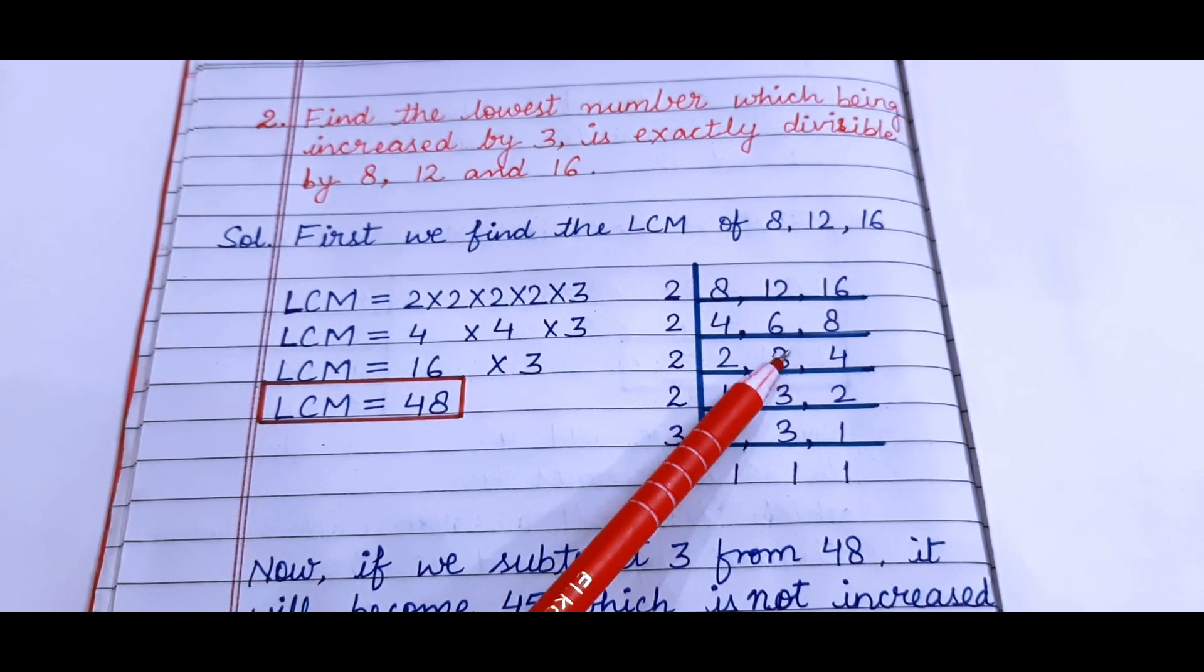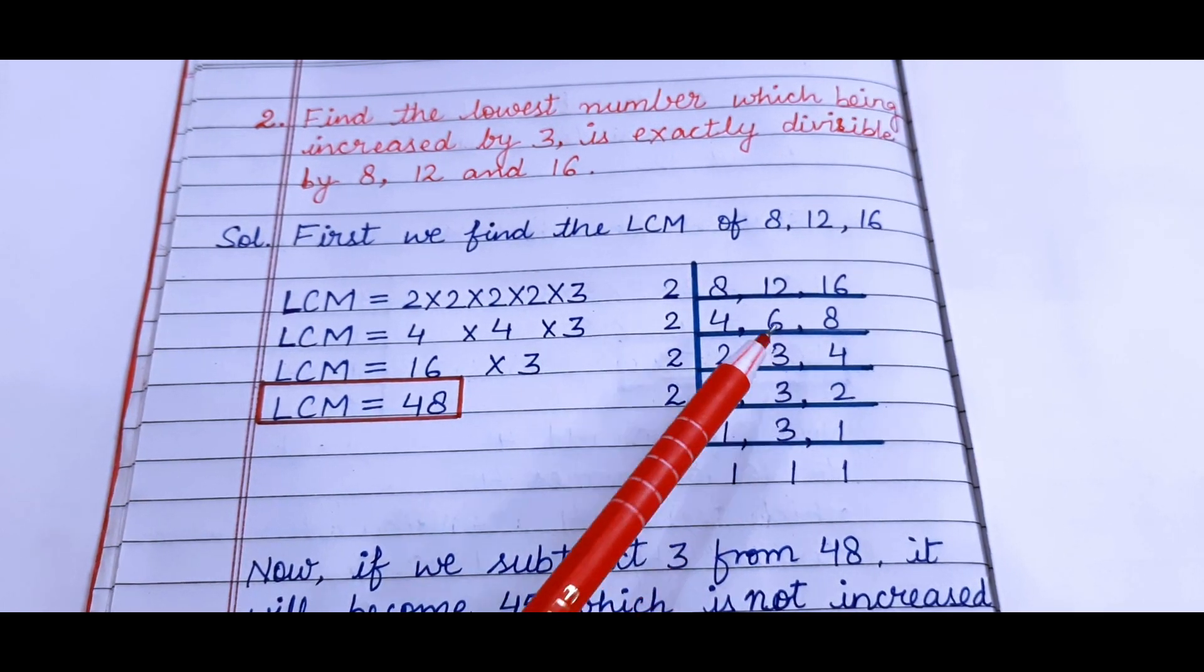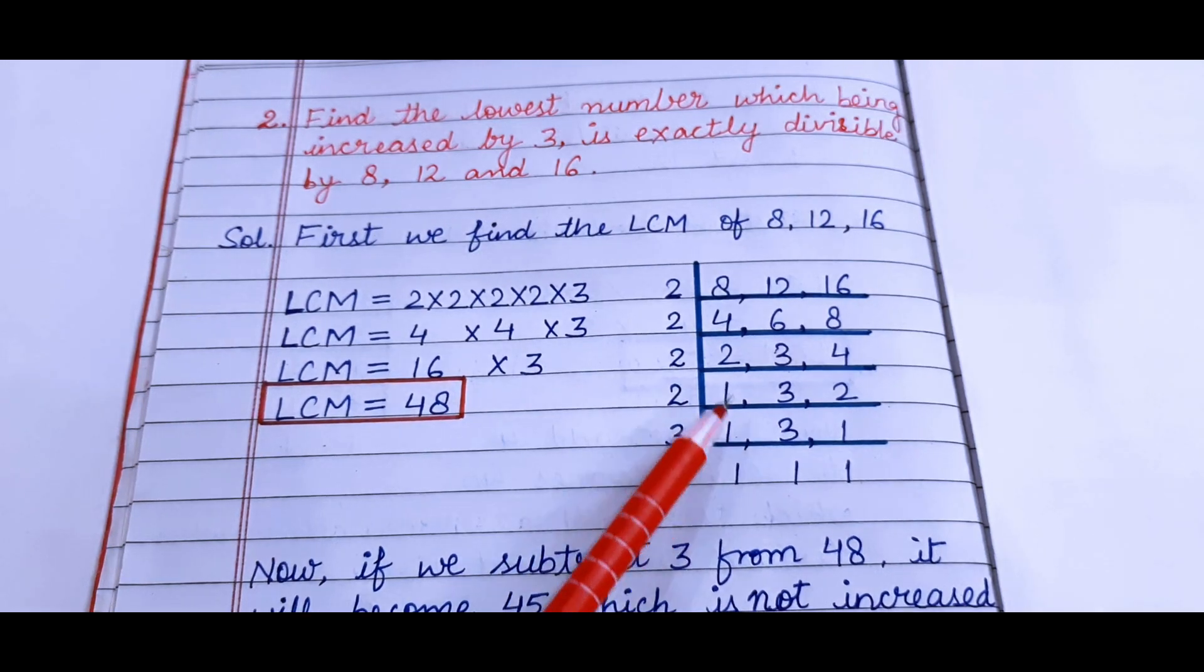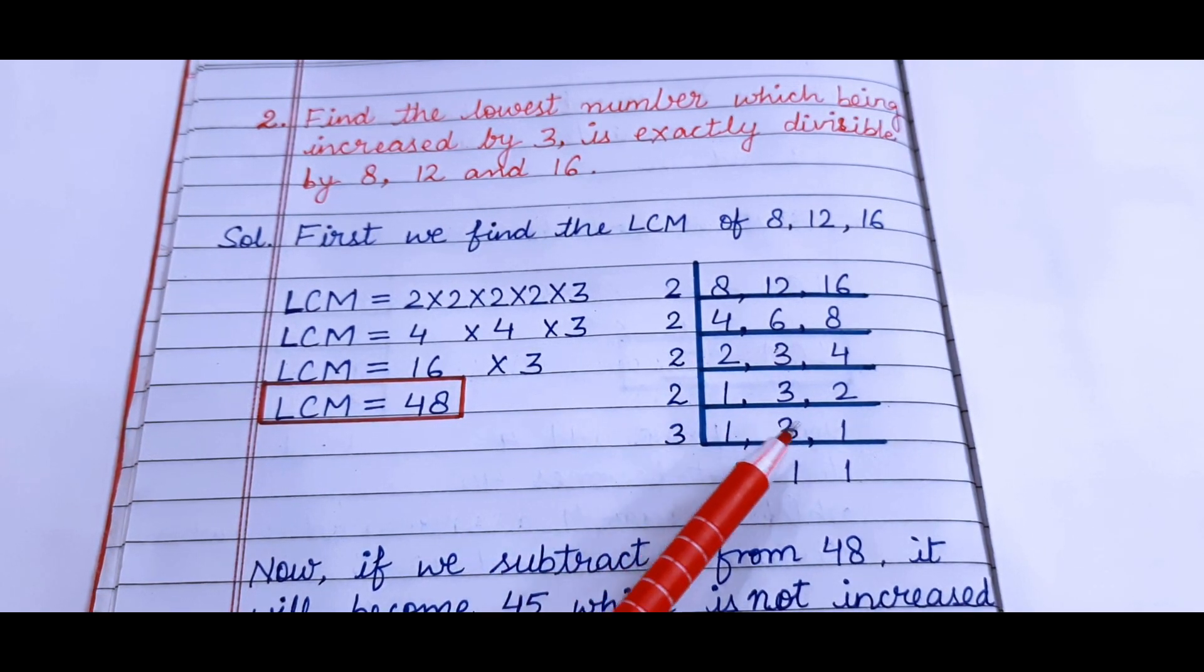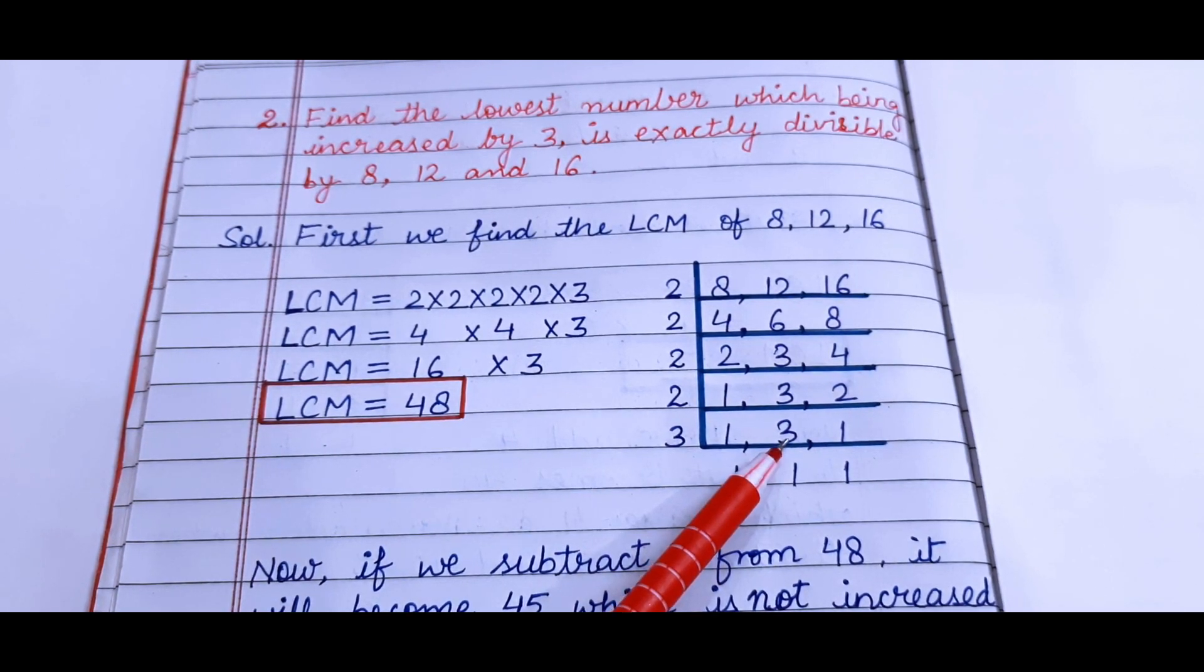Again 2 ones are 2, now 3 is not divisible. So we will copy 3 as it is. 2 twos are 4. Next is 2 ones are—sorry we have copied 1—2 ones are 2. 3 also we have copied because it is not divisible by 2.